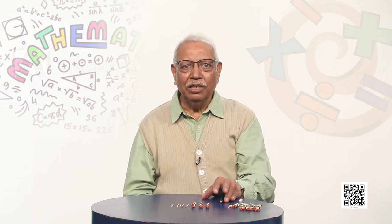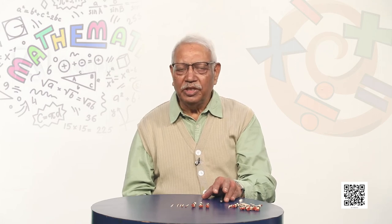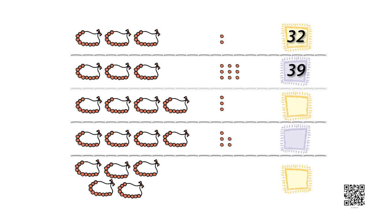Similarly, answer now by counting how many motis or beads are there. Let us count the strings of beads which have tens: 10, 20, 30, 40 — so 40 beads in strings of 10. Then how many loose beads: 1, 2, 3 — so 41, 42, 43. How we are going to write it: 4 tens and 3 ones, so we write 4, 3 — 43. That way we answer the question how many.